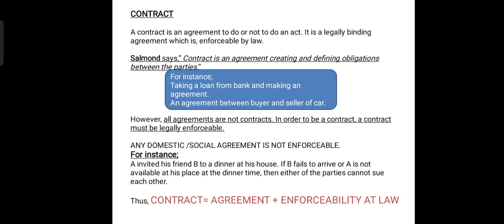So we need to discuss the meaning of contract first. A contract is basically an agreement to do or not to do an act. It is a legally binding agreement which is enforceable at law. Agreement is made between two or more persons and it may be regarding to do the particular thing or not to do the particular thing, and it is intended to be enforceable at law.